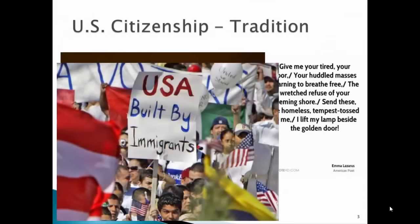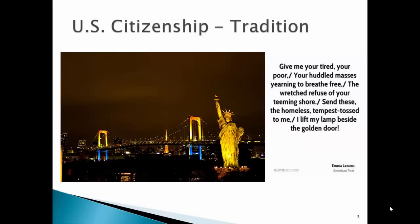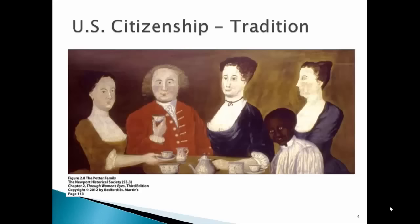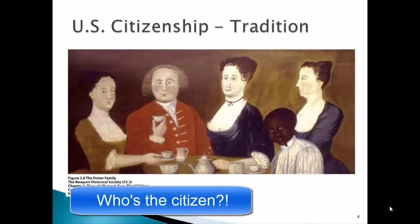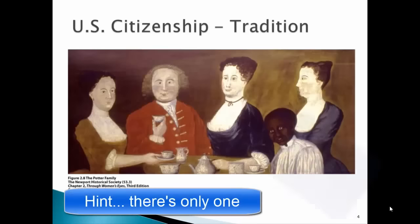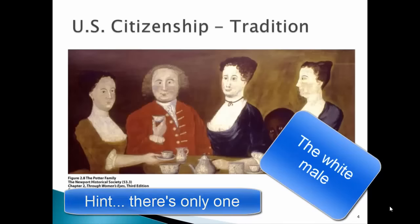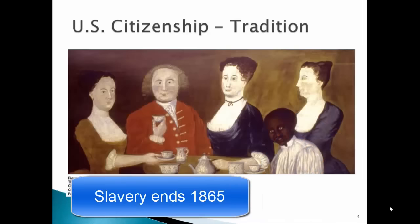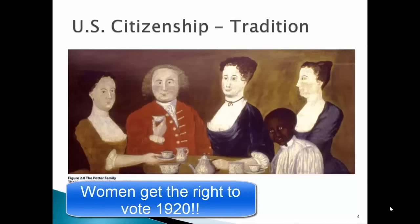That Statue of Liberty with the inscription 'give us your tired, your poor, your huddled masses yearning to breathe free' is a dedication to our immigrant past. One of the issues we have faced in our country is that who was and who was not a citizen has changed over the years. Can you spot the citizen in that painting? There's only one, and he only would have been a citizen if he owned property.